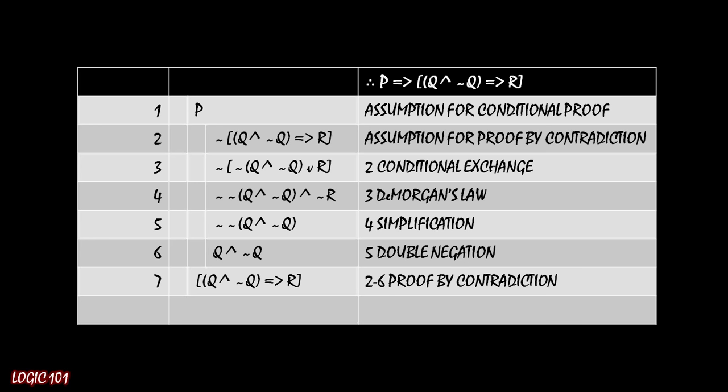And now that allows us to wrap up this entire proof, because remember, the conditional proof's goal was to show that the consequent was true, given that the antecedent P was true, and we've just done that using our nested proof by contradiction. So we can wrap up this proof like that, and we are done. P implies ((Q ∧ ¬Q) => R).